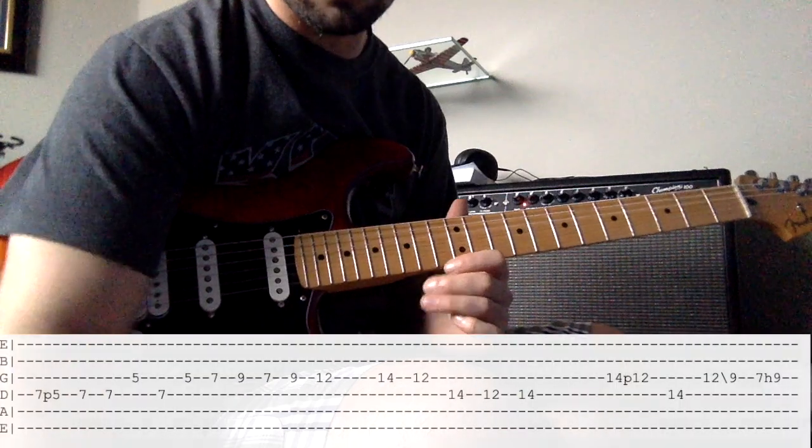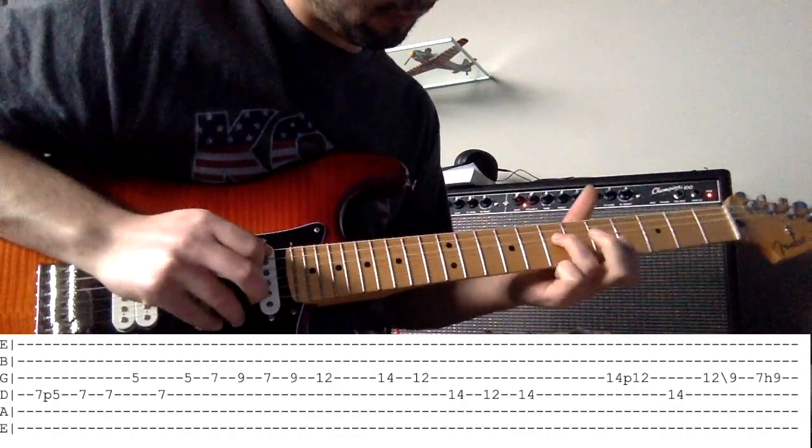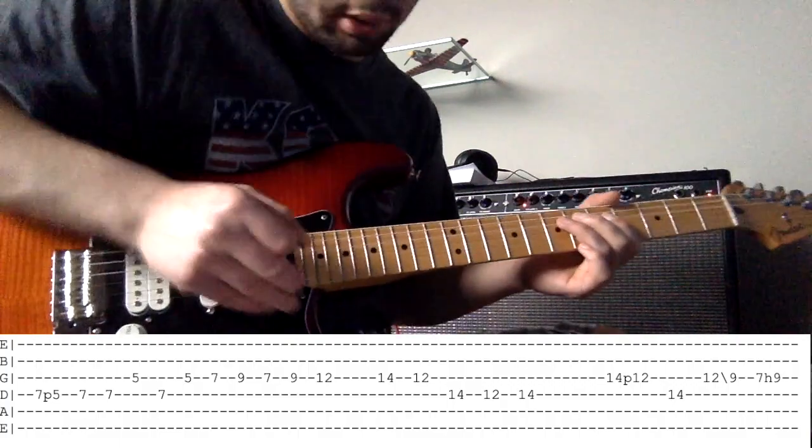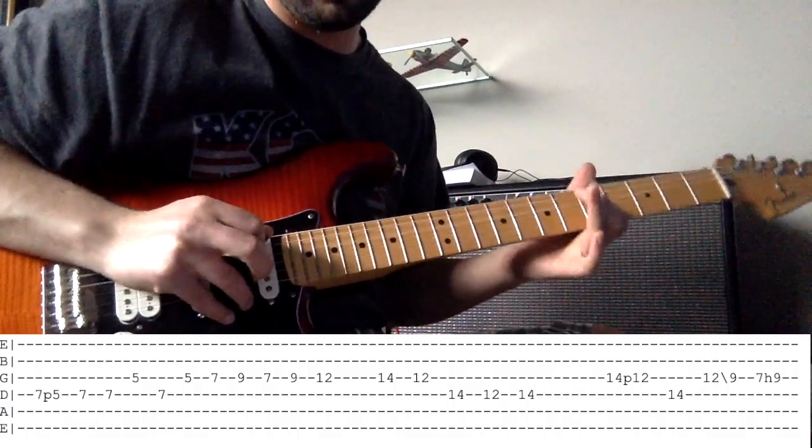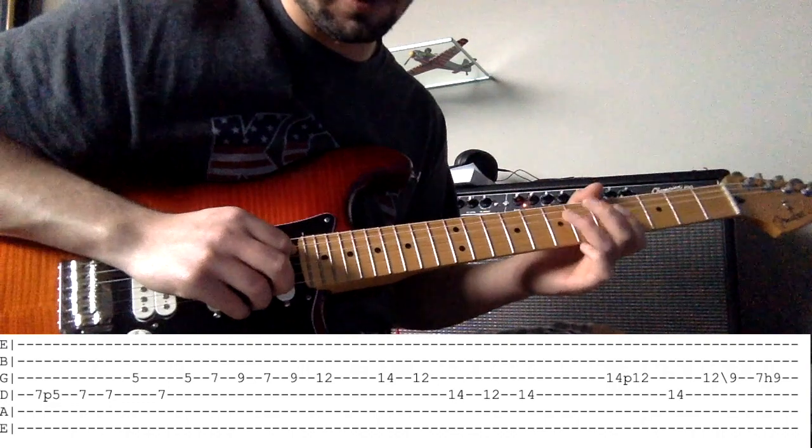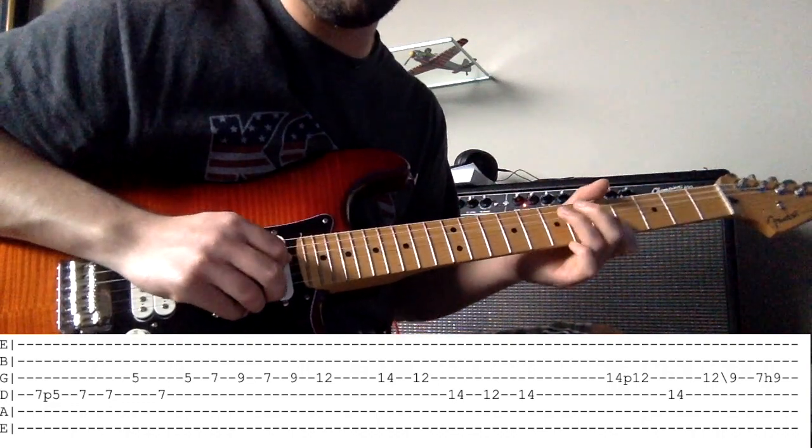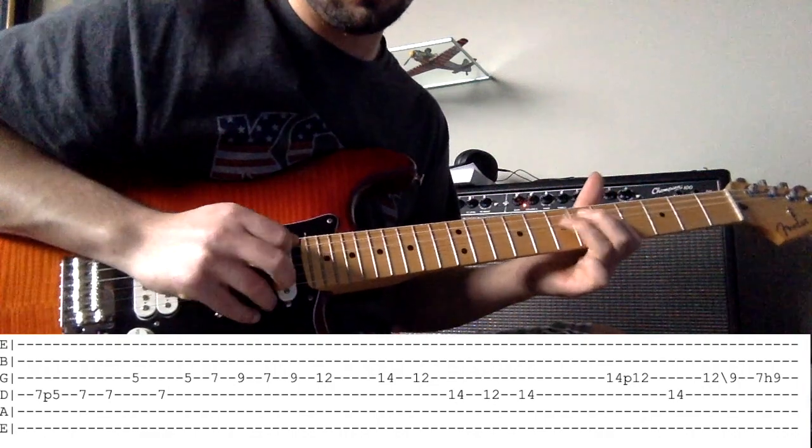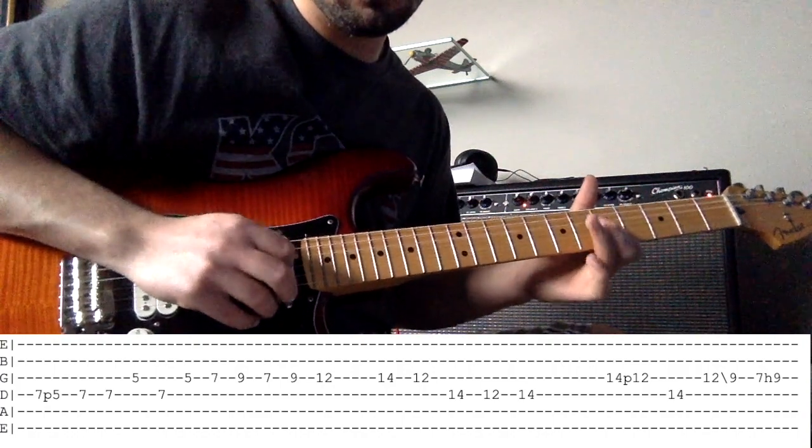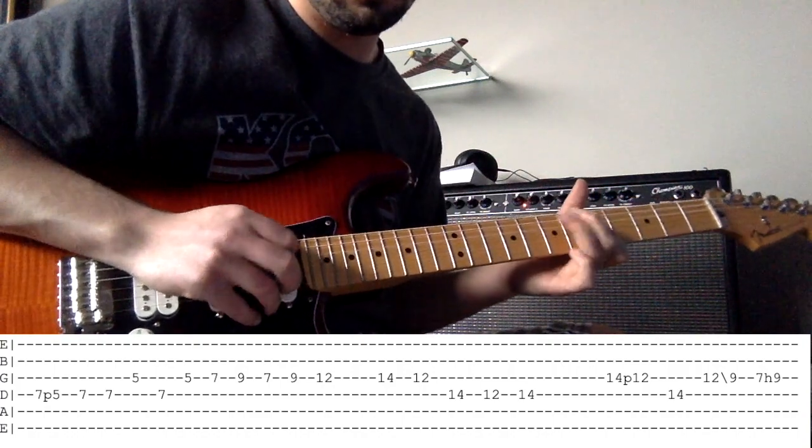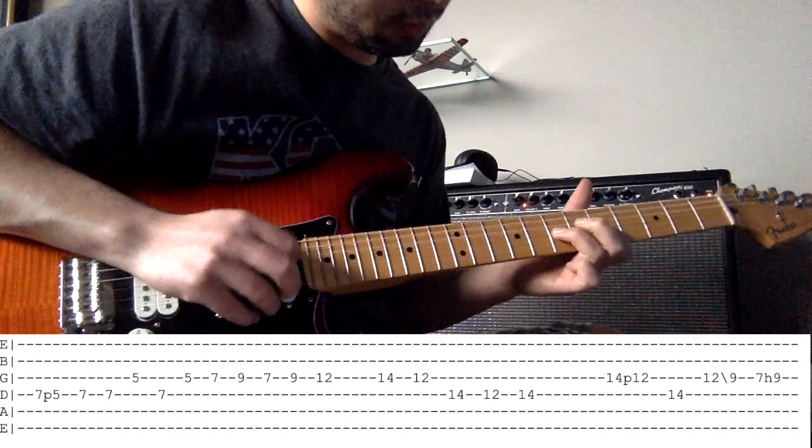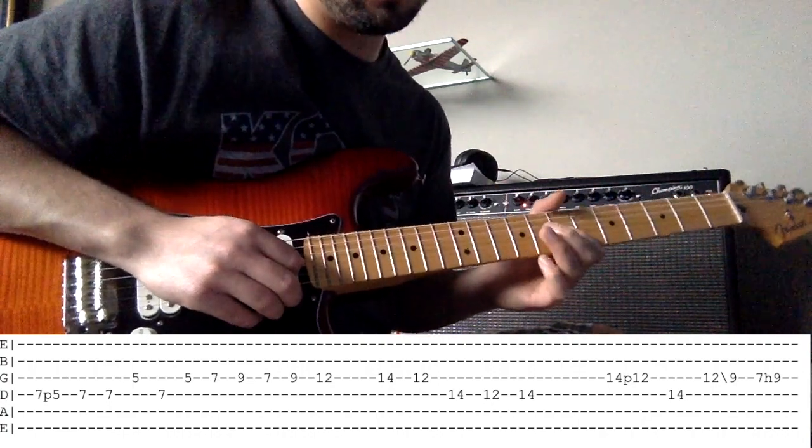So the first lick is going to go something like this. It's a pull off on the D string from 7 to 5, and then you're going to hit 7 again. What that is, is 7 on the D, 5 on the G, 7 on the D, and then you go back to 5 on the G. Then on the G you're going to go 7, 9, and then there you're going to go 7, 9, 12.